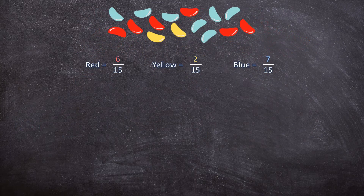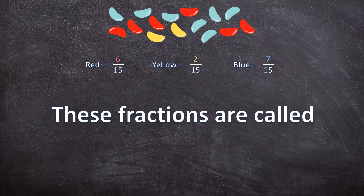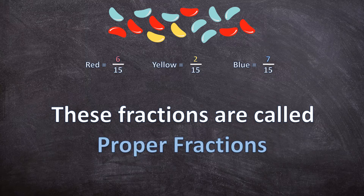Now we have different types of fractions. These types of fractions are called proper fractions because the denominator is bigger than the numerator. So when the bottom number is bigger than the top number, it's called a proper fraction.